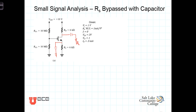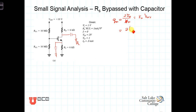From the DC bias conditions, we can calculate the transconductance parameter G_M, which is equal to 2 times the drain current divided by V_OV, and it's also equal to K_N times V_OV. Using our numbers: 2 times I_D (0.5 milliamps) divided by V_OV (1 volt) gives a transconductance of 1 milliamp per volt.